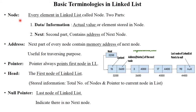There are some basic terminologies in linked list: node, address, pointer, head, and null pointer. Every element in a linked list is called a node. A node includes two parts: the data part stores the actual value or element, and the next part contains the address of the next node. For example, the first node contains data 15 and stores the address of the next node, which is 36,000. In this way each and every node links with each other.